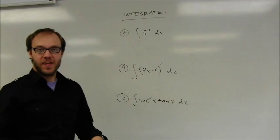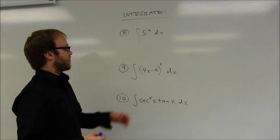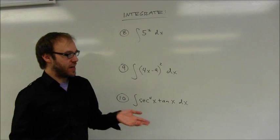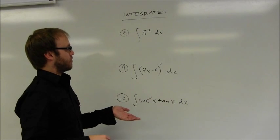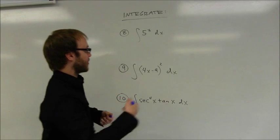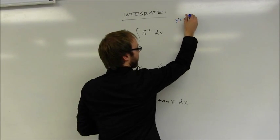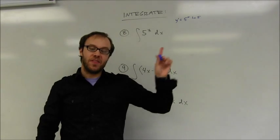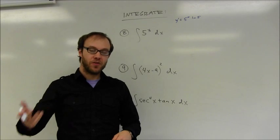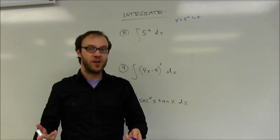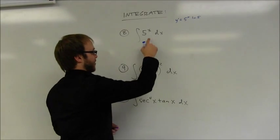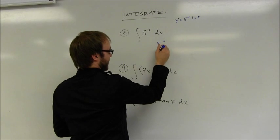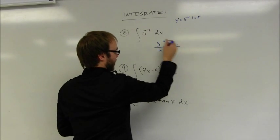Three final integration examples for this chapter. First, the integral of an exponential function like 5 to the x power. The derivative of 5 to the x is 5 to the x times the natural log of the base, which is just the natural log of 5 — a constant value. The integral reverses that process, so I divide by the natural log of 5. The result is 5 to the x divided by the natural log of 5, plus C.